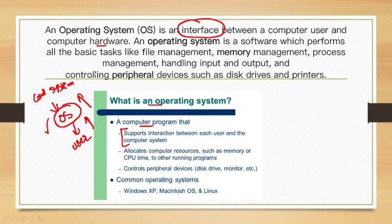The operating system is required to access the hardware, and it performs basic functions like file management, memory management, process management, handling input and output, and controlling peripheral devices such as disk drives and printers.